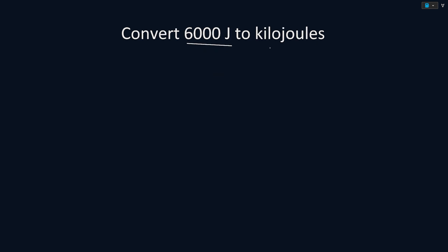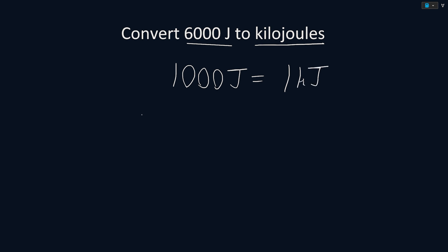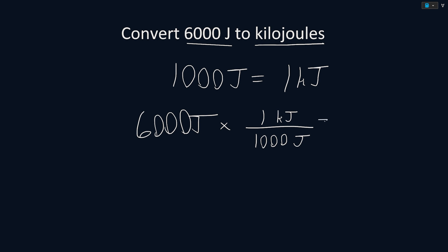Convert 6,000 joules to kilojoules. We know that there are 1,000 joules to 1 kilojoule. So to convert our units, we start with the units that we were given of 6,000 joules and multiply by a fraction that cancels out our units. We will put kilojoules on top and joules on the bottom. Solving this equation, we get that 6,000 joules is equal to 6 kilojoules.